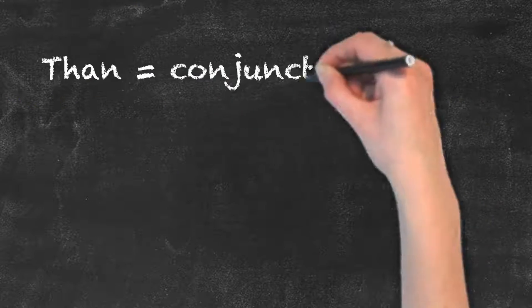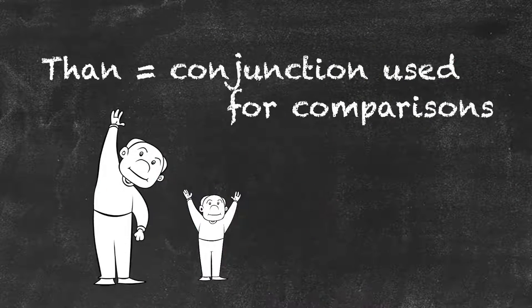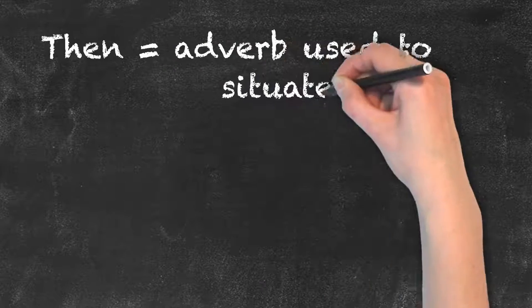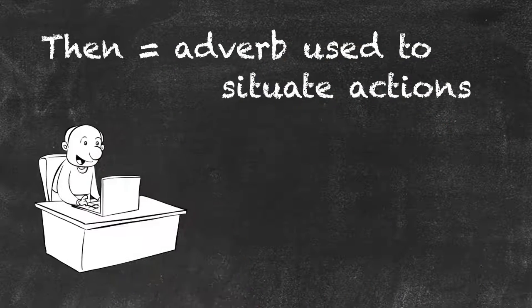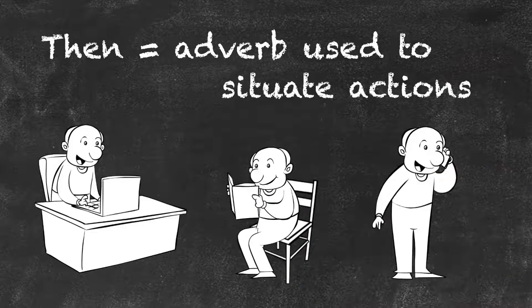Than is a conjunction used to compare things, whereas then is an adverb used to situate actions in time, such as: I wrote an email, then I read a book, and then I called my friend.